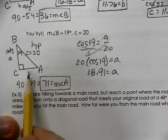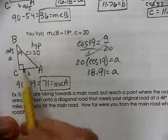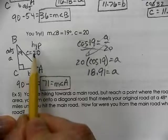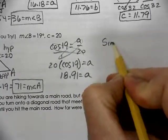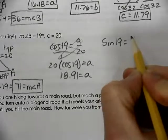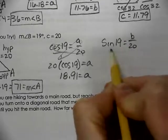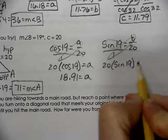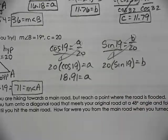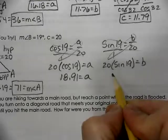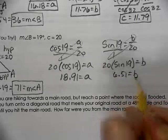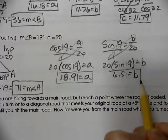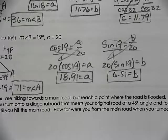Now for us to find our missing side of B, that is opposite the 19. So that's the opposite side, and we're going to use the hypotenuse. So sine of 19 equals opposite over the hypotenuse. Cross multiply. Using our calculator, 6.51 equals B. So we know all three sides, and now we know all three angles also.